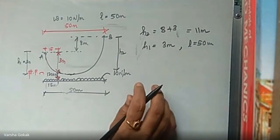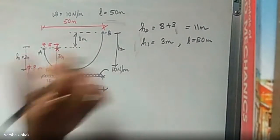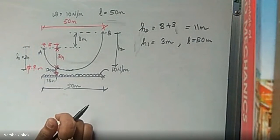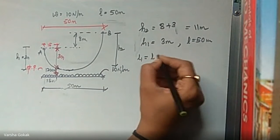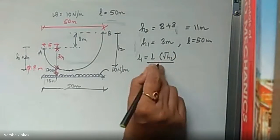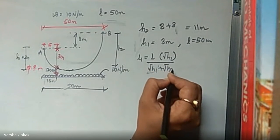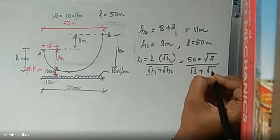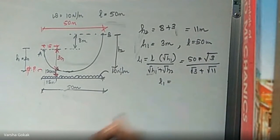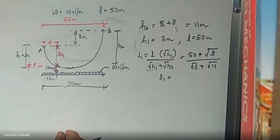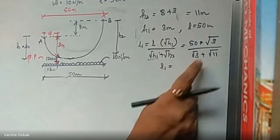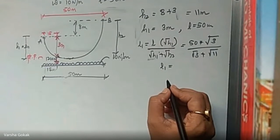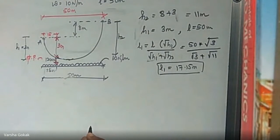Now using this, let us calculate L1 and L2. L1 equals L times root H1 divided by root H1 plus root H2, that is 50 times root 3 divided by root 3 plus root 11, which gives L1 equals 17.15 meters.